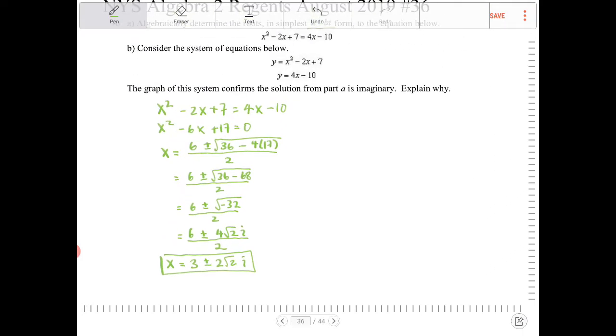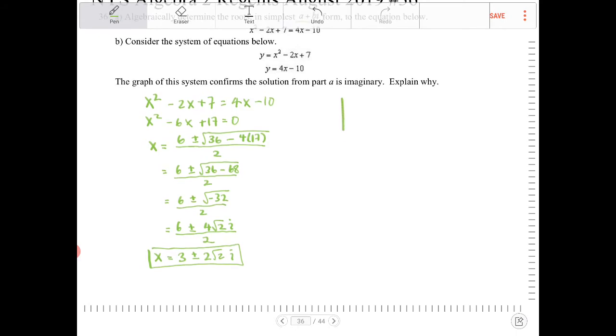And then part B says to consider the system equation and that the graph of the system confirms that the solution from part A is imaginary. Explain why. So I will graph out or at least sketch out where this is.